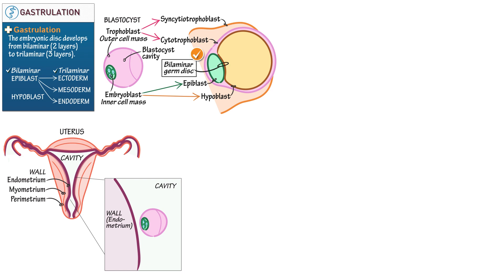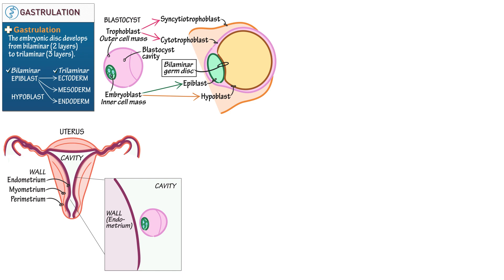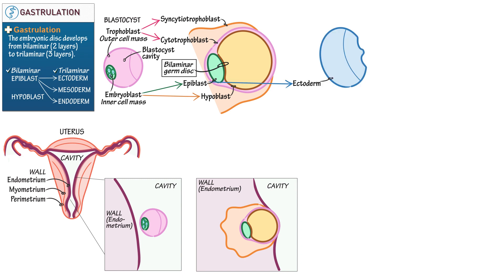Indicate the bilaminar germ disc where the epiblast and hypoblast meet. Next, redraw the magnified view of the uterine wall, showing that the syncytiotrophoblast has invaded the uterine wall where it meets the cavity. Then redraw the cytotrophoblast, epiblast, and hypoblast. For the next stage, show that the epiblast generates cells that become the ectoderm — a transition from what was previously the epiblast — and the endoderm — a transition from what was previously the hypoblast.